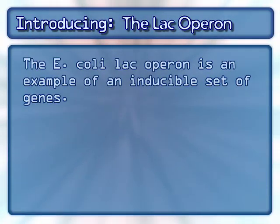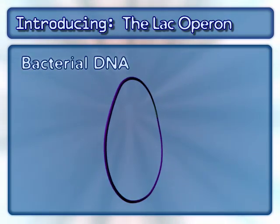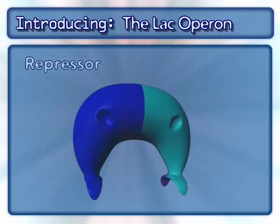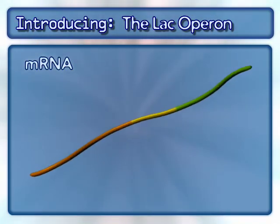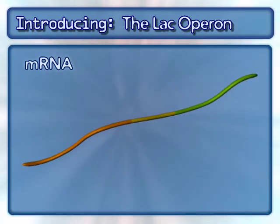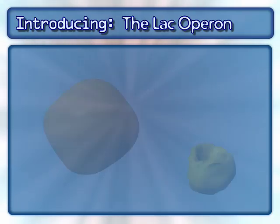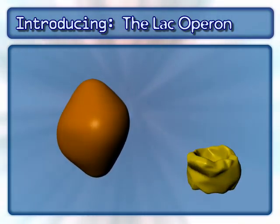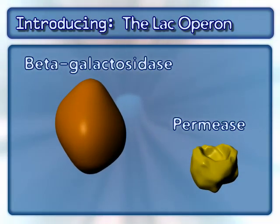The E. coli lac operon is an example of an inducible set of genes. These genes are responsible for the breakdown of lactose into sugars used for cellular metabolism. This inducible system involves bacterial DNA, a repressor, mRNA, and the sugar molecule lactose. This animation will only focus on two of the three proteins encoded by the lac operon: beta-galactosidase and permease.